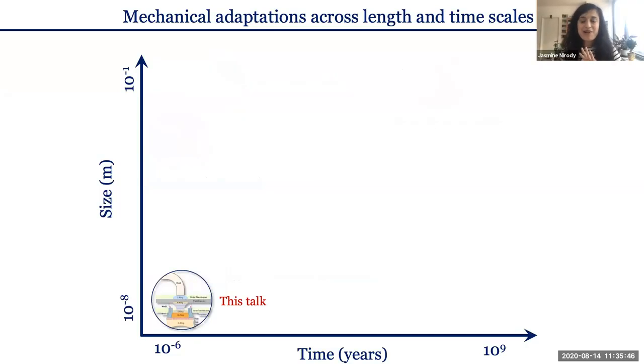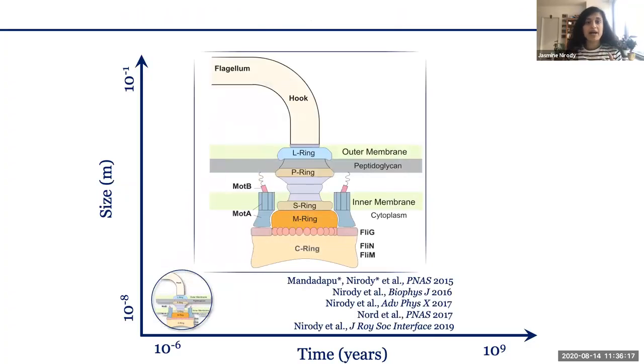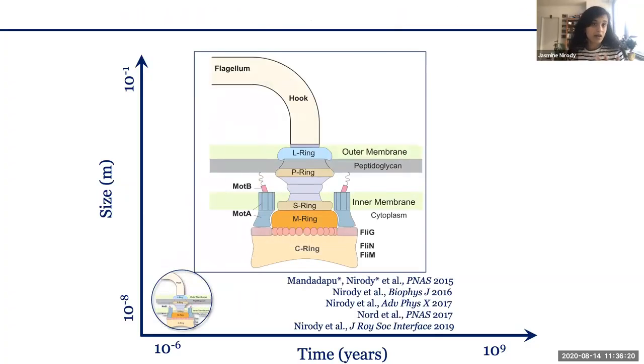For the next 20 minutes or so I'm going to zoom in on this corner to talk about flagellated swimming in bacteria. We've heard a bit about eukaryotic flagella so far, but bacterial and eukaryotic flagella are completely different organelles with completely different evolutionary origins. Instead of being driven by linear motors that go up and down the filament, bacterial flagella are driven by a rotary motor that sits at its base called the bacterial flagellar motor.